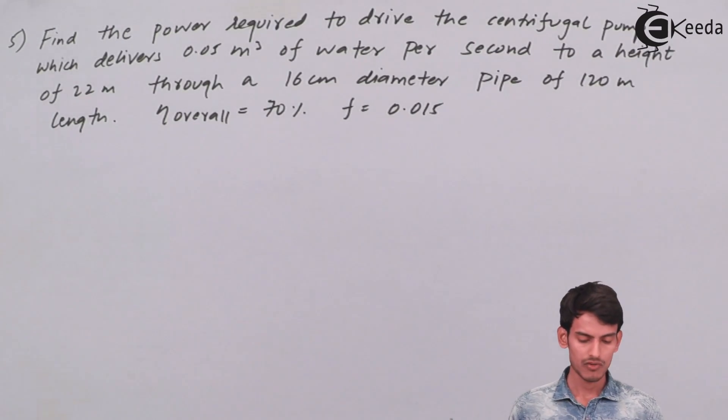Find the power required to drive the centrifugal pump which delivers 0.05 m³ of water per second to a height of 22 meters through a 16 cm diameter pipe of 120 meter length. The overall efficiency of the pump is 70% and the friction factor is given as 0.015.